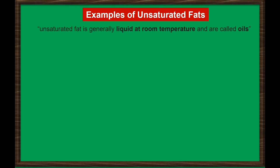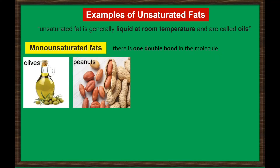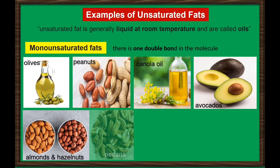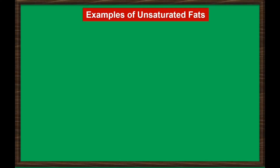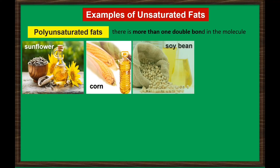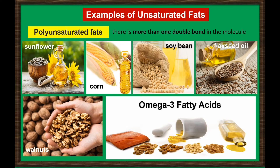Unsaturated fat is generally liquid at room temperature and is called oil. Monounsaturated fats have one double bond in the molecule and are commonly found in high concentrations in olive, peanut, and canola oils, avocados, nuts such as almonds, hazelnuts, and pecans, and seeds such as pumpkin and sesame seeds. Polyunsaturated fats have more than one double bond in the molecule; good sources include sunflower, corn, soybean, and flaxseed oils, and walnuts. Most of these foods contain omega-3 fatty acids, which are important for good health.